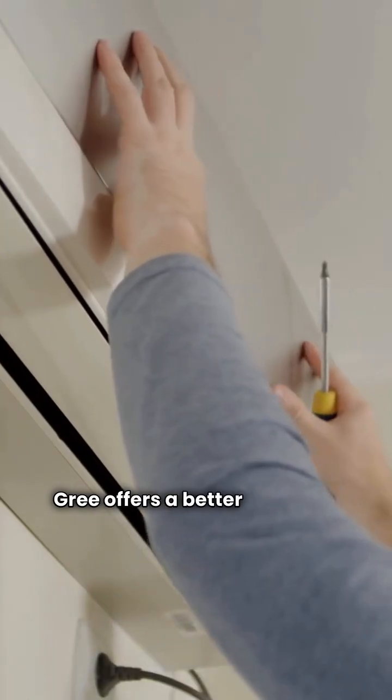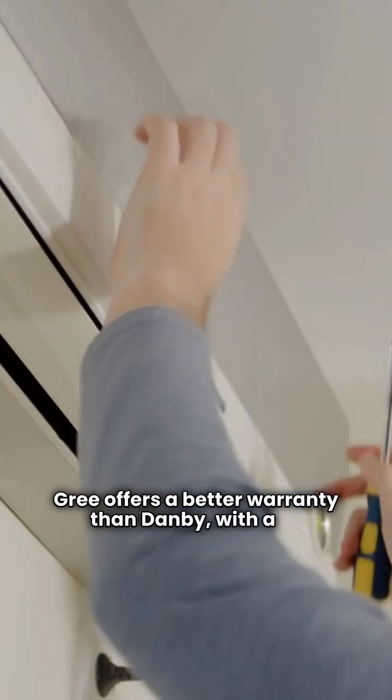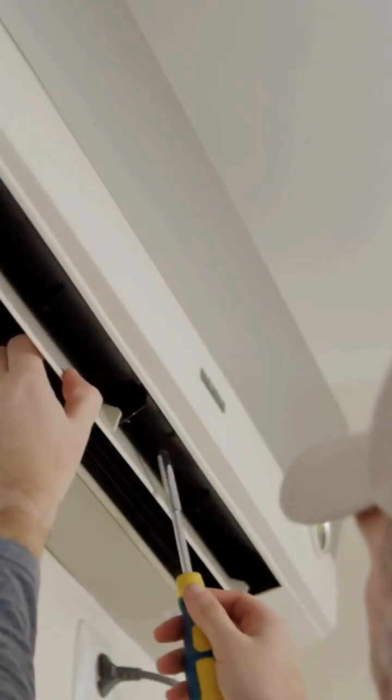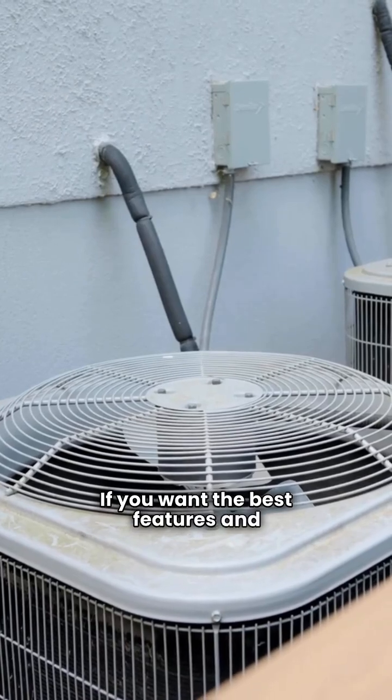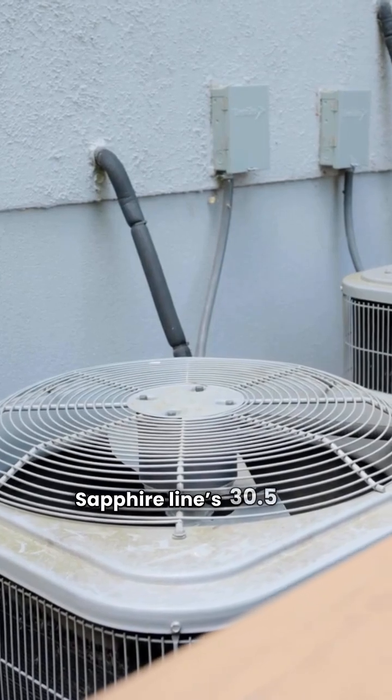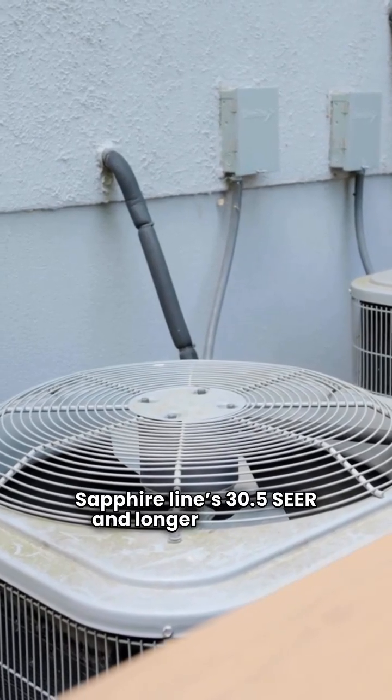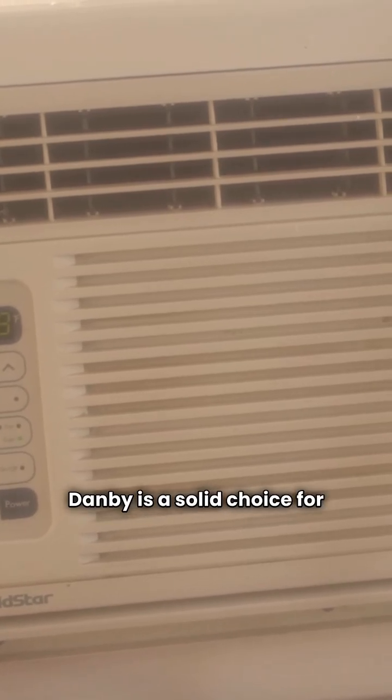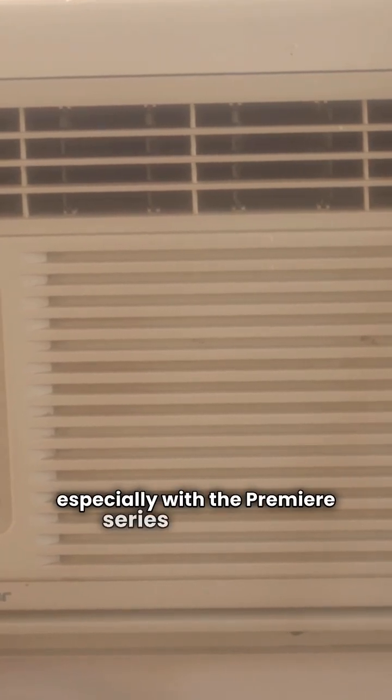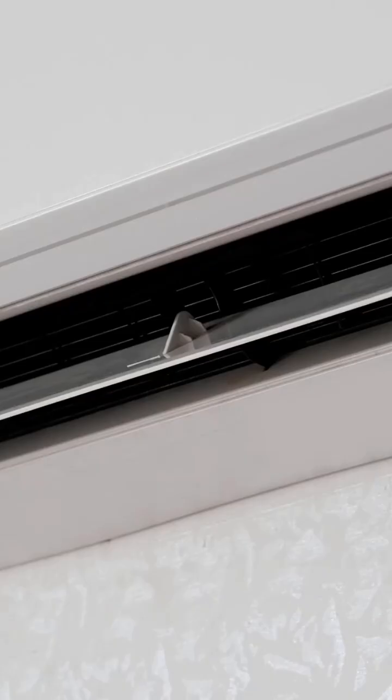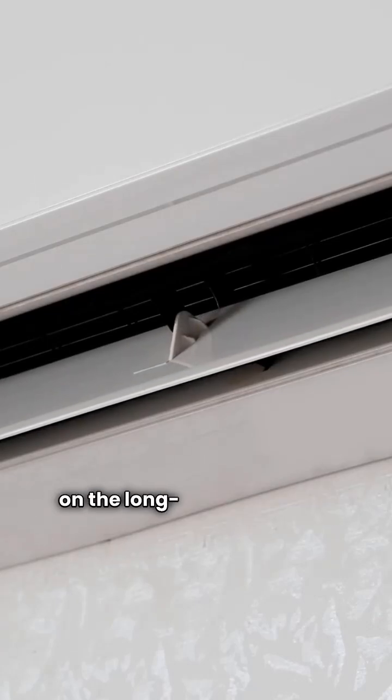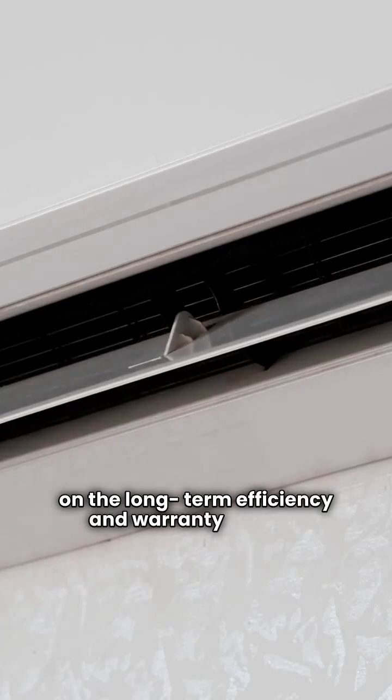Gree offers a better warranty than Danby, with a two-year unit warranty and a seven-year compressor warranty. If you want the best features and warranty, Gree takes the win with their Sapphire Line's 30.5 SEER and longer warranty. Danby is a solid choice for reliability and efficiency, especially with the Premier Series at 23 SEER. You'll save up front with Danby, but you might miss out on the long-term efficiency and warranty of Gree.